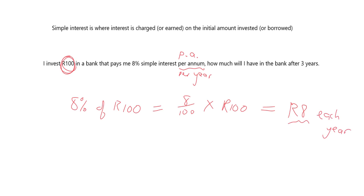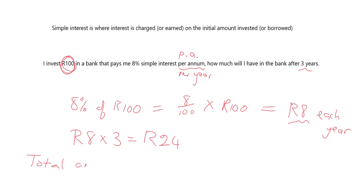How many years am I going to leave it there for? Three years. So I'm going to take that 8 rand and multiply it by three, and over the three years I'll get 24 rand interest. So my total amount in the bank will be 100 plus 24, which equals 124.